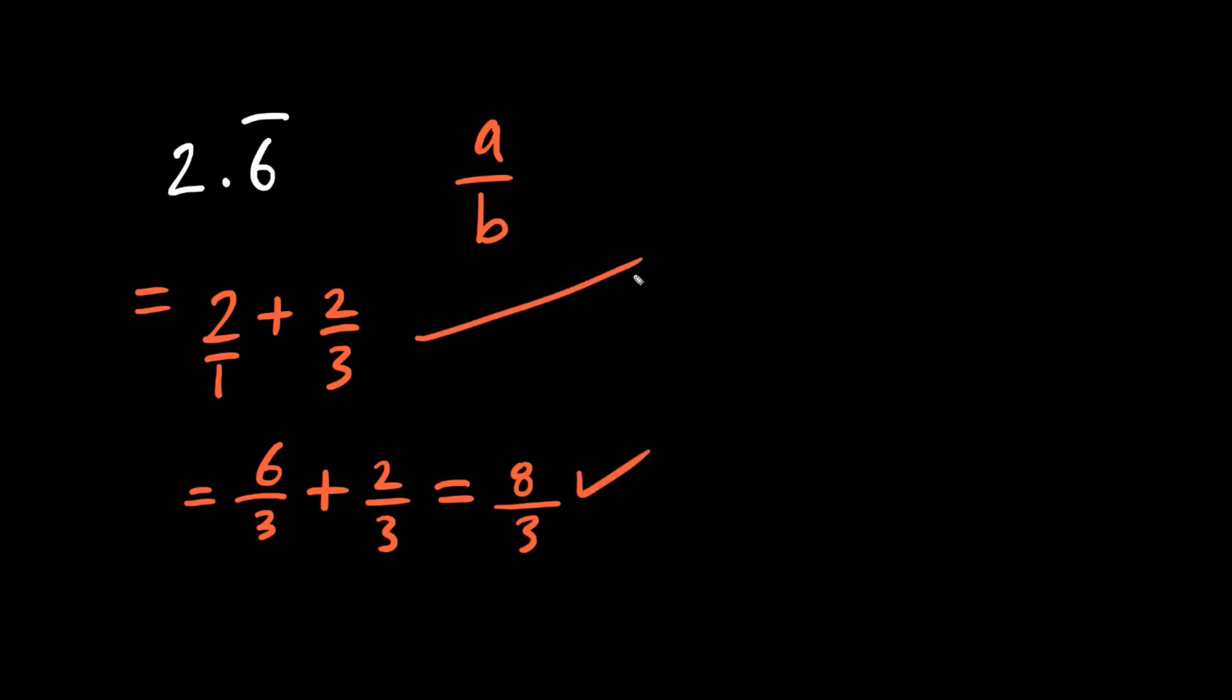Another way of doing this is to write 2 and two-thirds as a mixed fraction. You can multiply 2 times 3 is 6, plus 2 is 8, and we just copy the denominator. So we can now convert 2.6 repeater to a fraction.